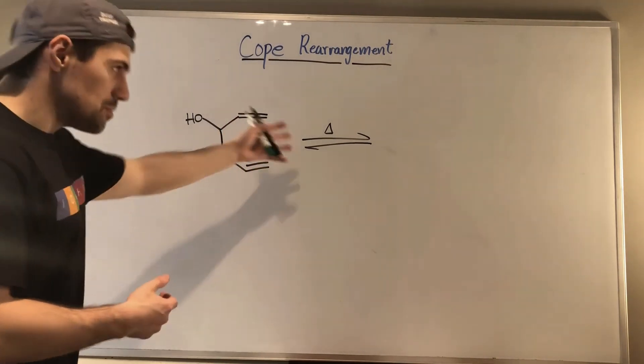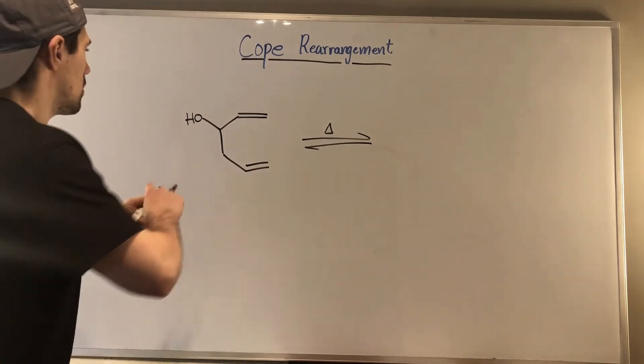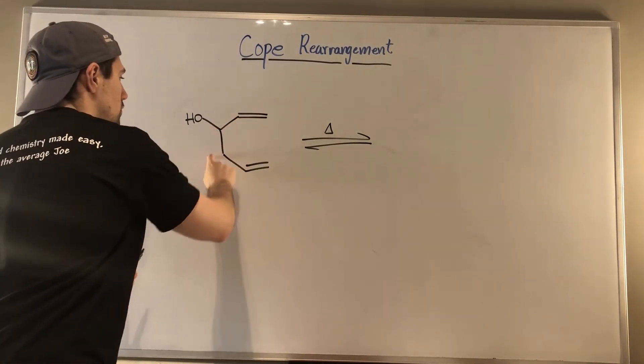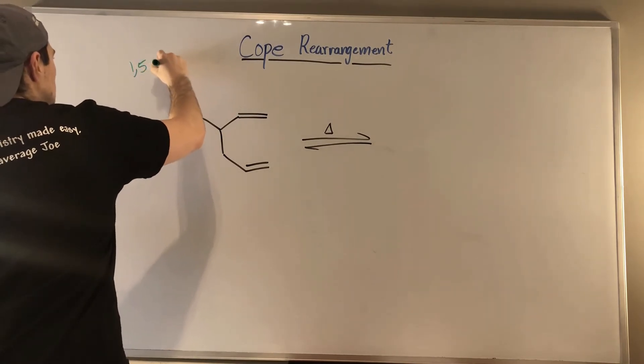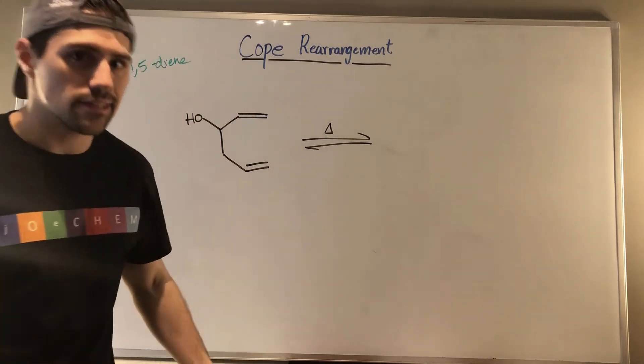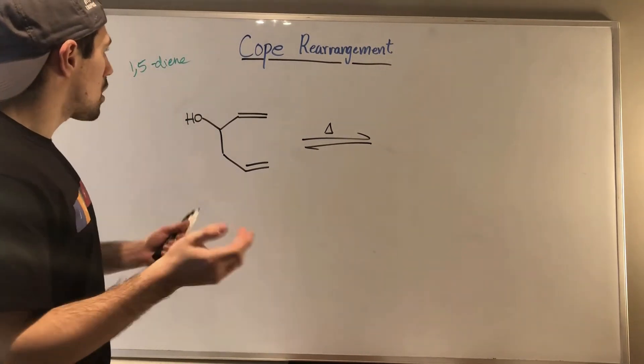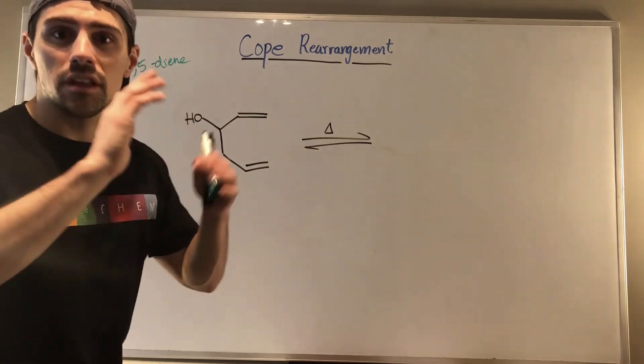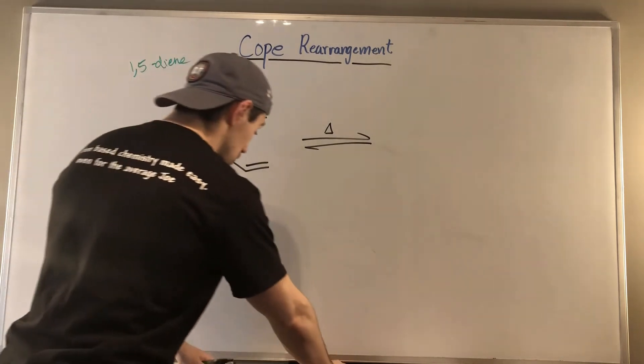All right, so if we take a look at our wonderful new example, we see some heat, we see some equilibrium arrows. So what's going on? Well, one, two, three, four, five. Okay, we see we have a one, five diene. Oxygen is not in the chain, so it's not a Claisen, but we got a Cope rearrangement on our hands. So we got a jar of three arrows that concerted one step, mechanism type deal.